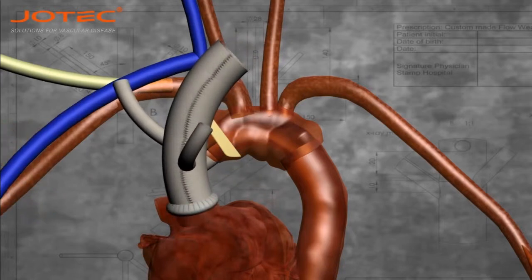Proximal anastomosis of the GPE graft at the level of the sinotubular junction of the aortic root, being careful to give the right angle to the prosthesis. The branches of the innominate trunk and left common carotid artery must be tilted towards the superior vena cava.